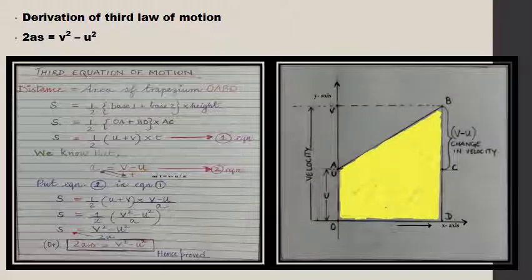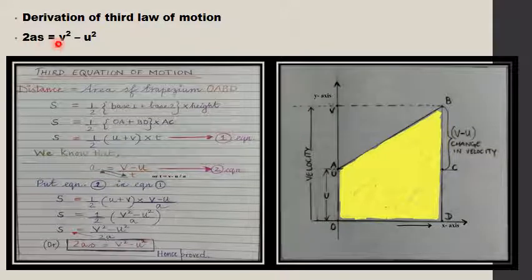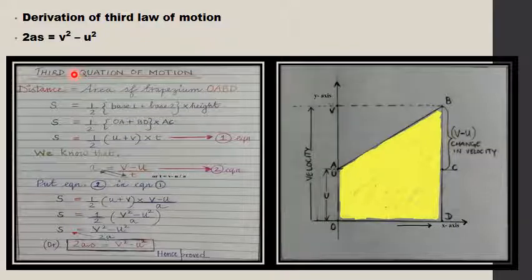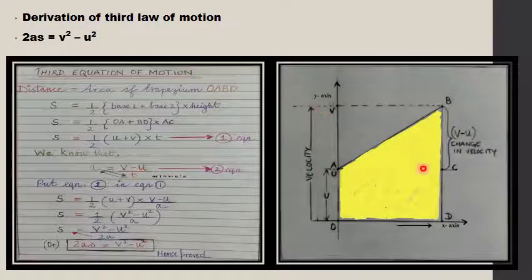This is the third topic for derivation: derivation of the third law of motion. The formula is 2as = v² - u². This is graphically derived using the velocity-time graph.